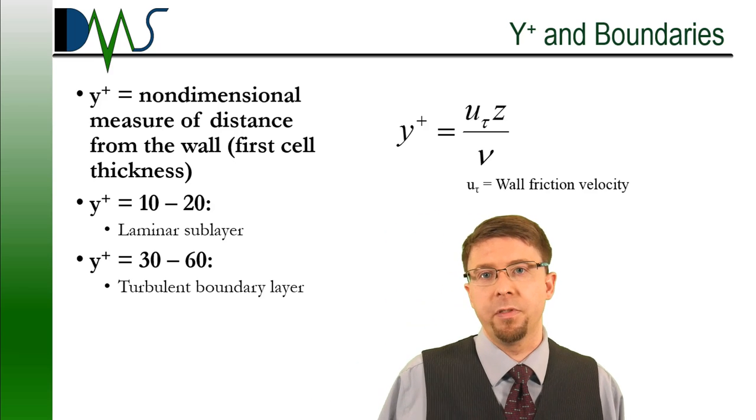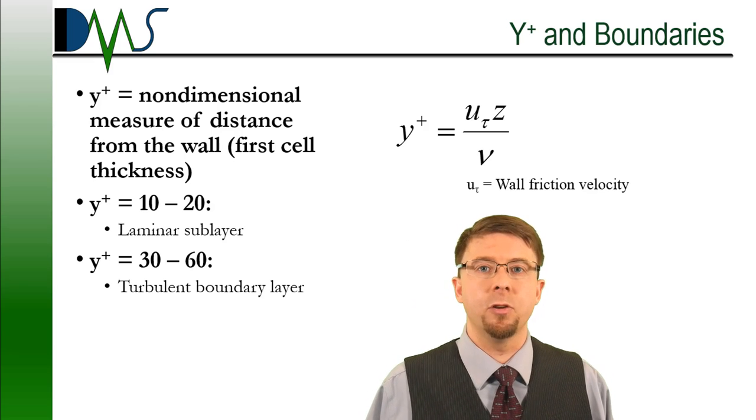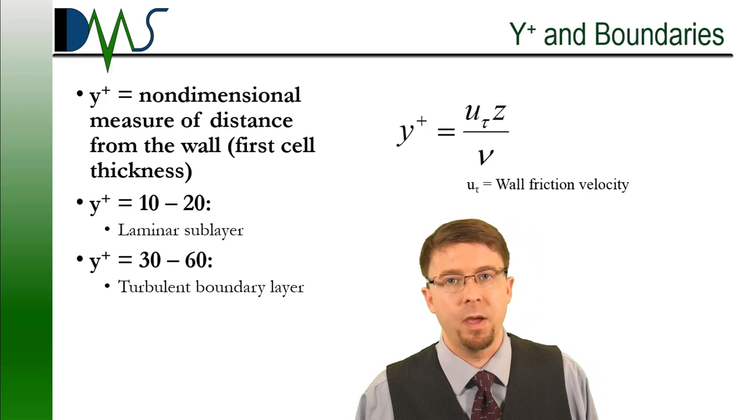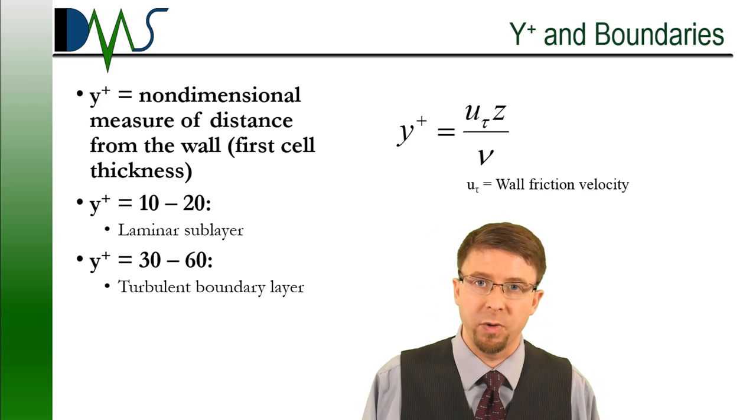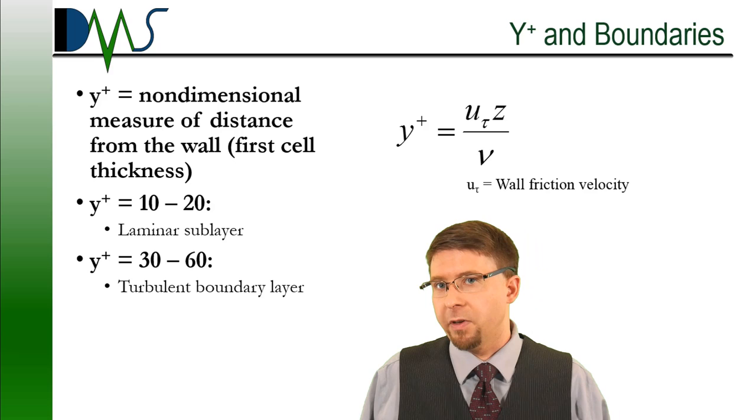If you're talking a Y-plus of 30 to probably 60, that's going to be your turbulent boundary layer. And anything above that is also going to be turbulent as well.